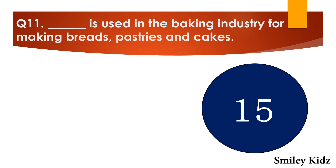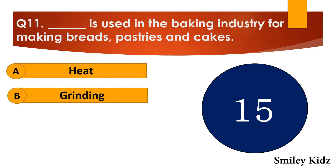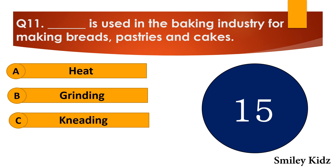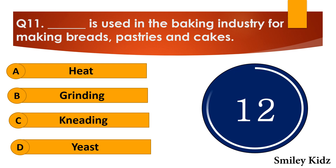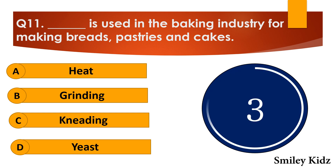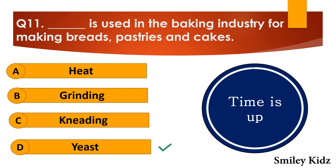Question number eleven: Dash is used in the baking industry for making breads, pastries and cakes. The options are: A. Heat, B. Grinding, C. Kneading, or D. Yeast. Your time starts now. Your time is up and the right answer is option D — yeast. Yeast is used in the baking industry for making breads, pastries and cakes.